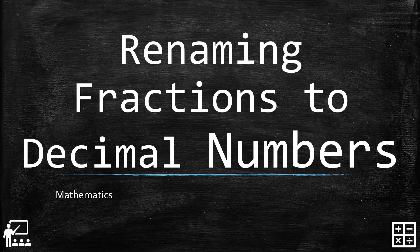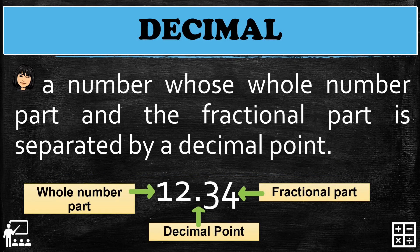This video lesson is about renaming fractions to decimal numbers. In my previous lessons, if you want to know the vice versa for this topic, just click on the suggested video above. A decimal is a number whose whole number part and fractional part is separated by a decimal point, as you can see on my screen. The whole number part is before the decimal point and the fractional part is after the decimal point.